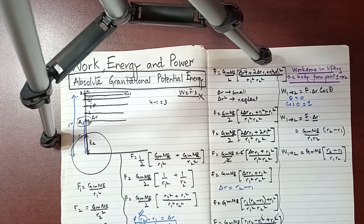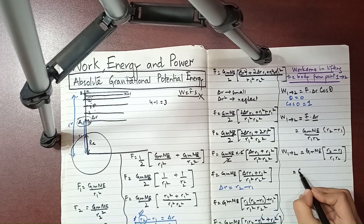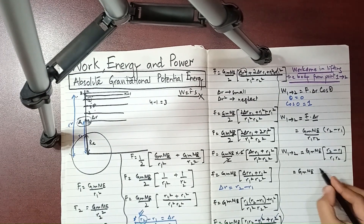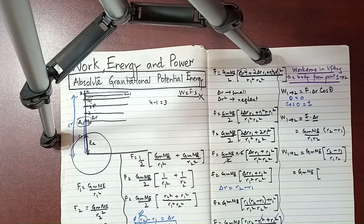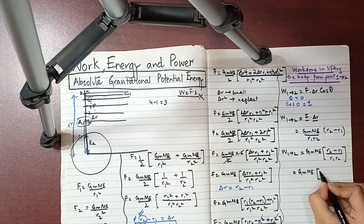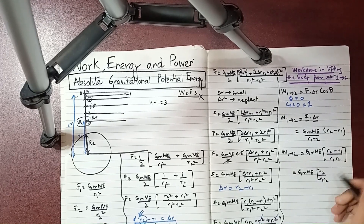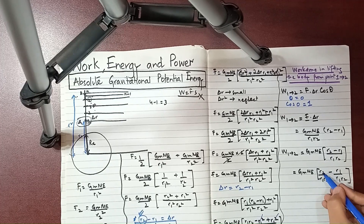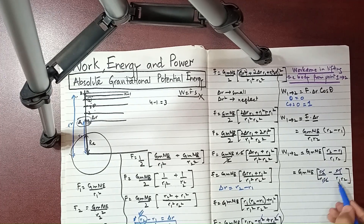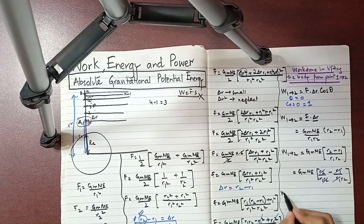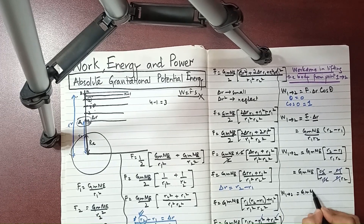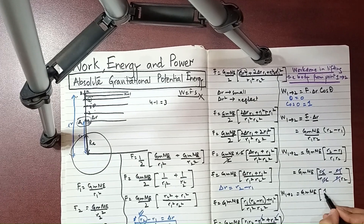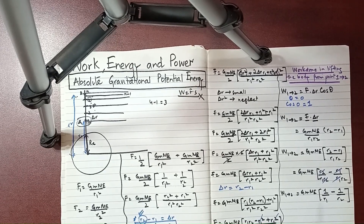Now if I open it and write this openly — GMₑm — and write it a different way, like r₂ upon r₁r₂ minus this — here we get the work done from point 1 to 2.